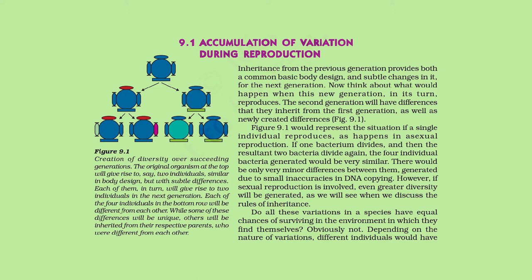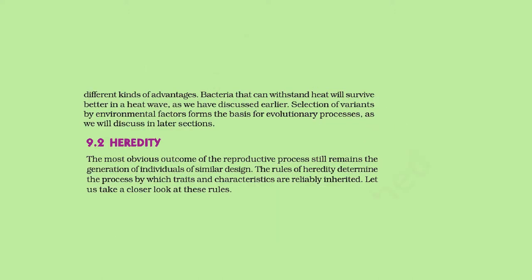If sexual reproduction is involved, even greater diversity will be generated as we will see when we discuss the rules of inheritance. Do all these variations in a species have equal chances of surviving in the environment? Obviously not. Depending on the nature of variations, different individuals would have different kinds of advantages. Bacteria that can withstand heat will survive better in a heat wave. Selection of variants by environmental factors forms the basis for evolutionary processes.